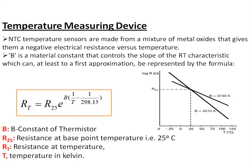As a temperature measuring device, NTC thermistors are made from a mixture of metal oxides that give a negative electrical resistance versus temperature characteristic. One important parameter of the NTC thermistor is the B constant. The B constant determines the slope of the resistance-temperature curve. A B value of 4570 K produces a steeper curve compared to a B value of 3740 K.